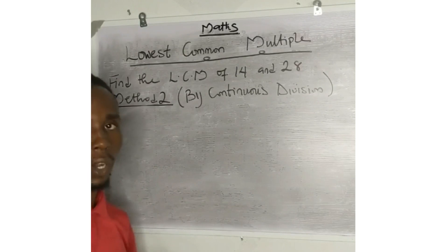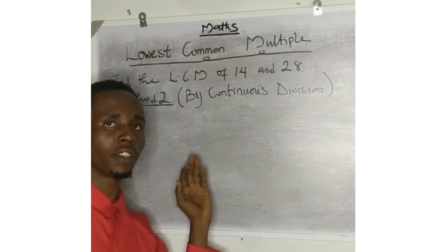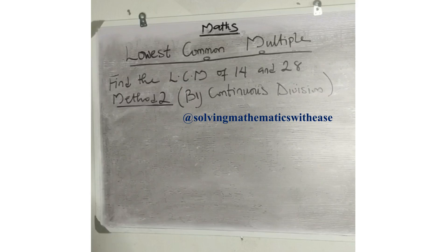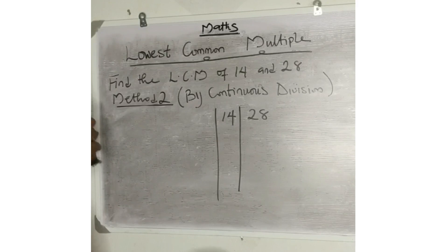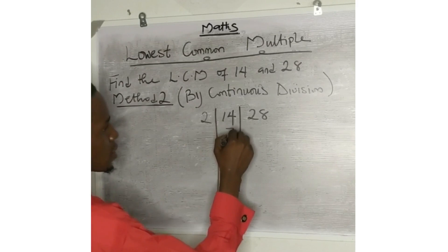Now, I beg you guys, you shouldn't confuse continuous division for LCM with HCF. Now, on the LCM, we have this. You know, in HCF, we said you must divide with a number that can divide the two of them. But in LCM, you keep on dividing till you have one. So now,